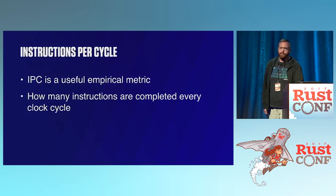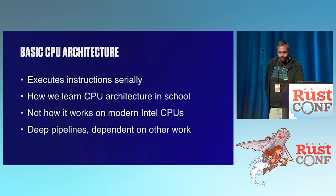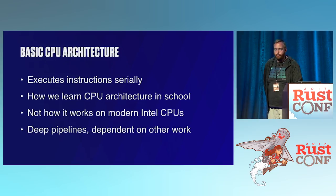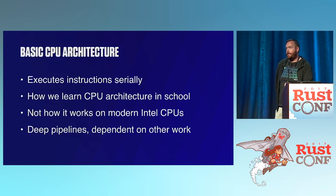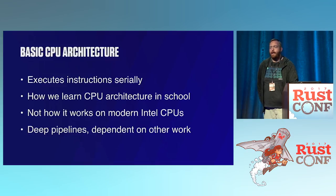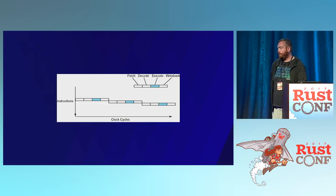We use IPC as a useful empirical metric. It tells you how many instructions are completed every clock cycle. When we learn CPU architecture in school, we tend to learn it as a program that runs one instruction then the next and so on — but that's just not how modern Intel CPUs work. This is the serial model: you run the first instruction, then the next, then the third.